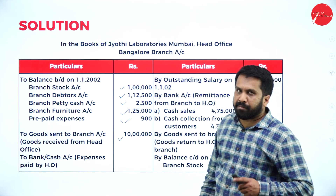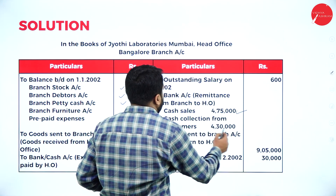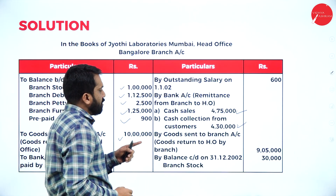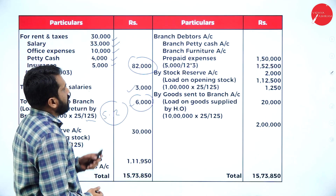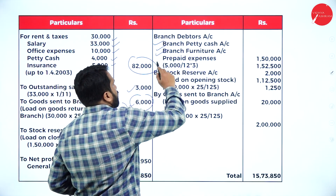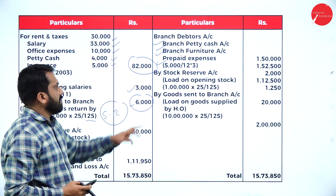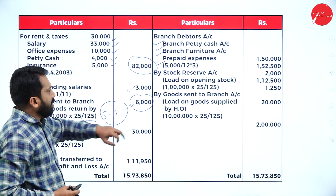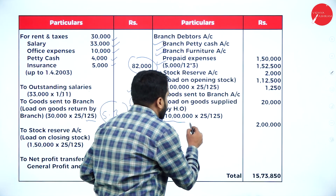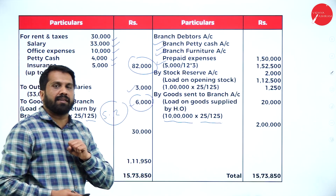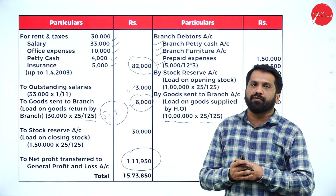On the credit side: outstanding salary as given, then bank remittance — cash sales and cash collected from customers — total both and write in the outer column. Any balance carried on from branch stock: 30,000. Similarly, branch debtors, petty cash, and furniture closing balances are written. Stock reserve: for your opening balance of one lakh, calculate 25 by 125 for stock reserve. Goods sent to branch — also 10 lakh into 25 by 125 for stock reserve. Once you total everything, there is a net profit of 1 lakh 11,950.